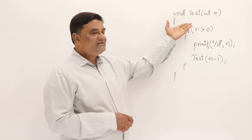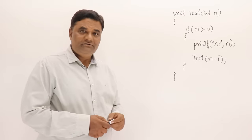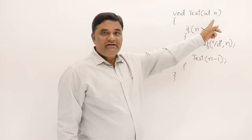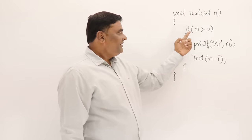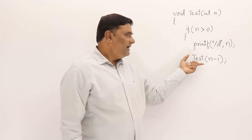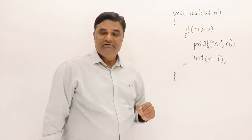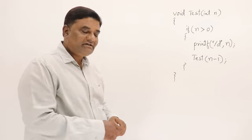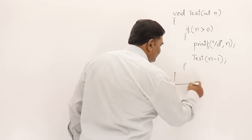I already have an algorithm — a C language function written here. You can call it an algorithm also. The function 'test' takes n as input, and if n is greater than 0 it prints the value and then calls itself for n minus 1.